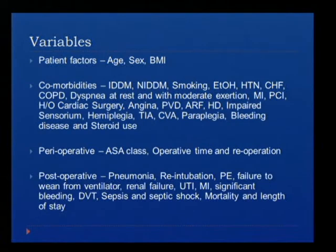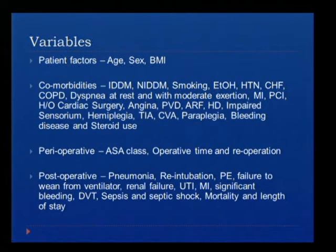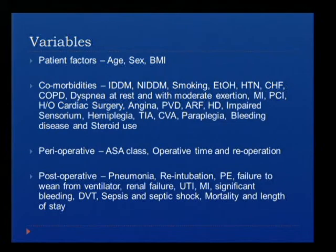We collected data on many patient variables, including age, sex, and comorbidities including diabetes, smoking, alcohol, hypertension, CHF, COPD, dyspnea, history of myocardial infarction, previous coronary interventions, history of cardiac surgery, angina, peripheral vascular disease, renal failure, hemodialysis, impaired sensorium, neurological comorbidities, history of bleeding disease, and history of steroid use.